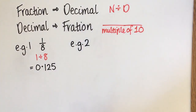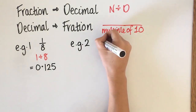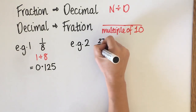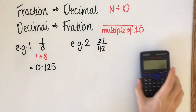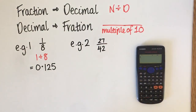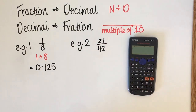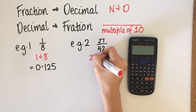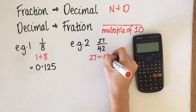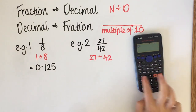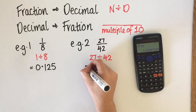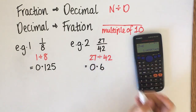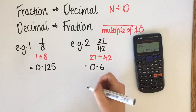Another example — a more obscure one: 27 over 42. That's a really hard one to try to put over 100, so we just do numerator 27 divided by denominator 42. 27 divided by 42 gives approximately 0.643, rounding to three decimal places.